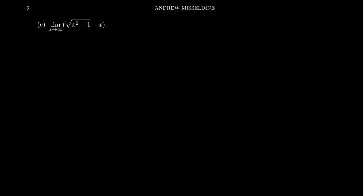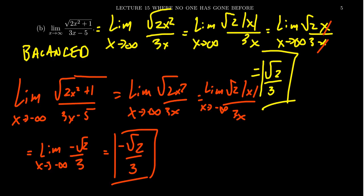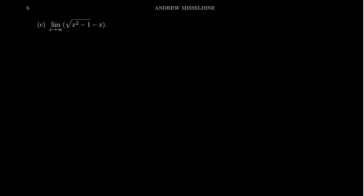The next example is a bit different. Unlike the previous examples, which had an initial indeterminate form of infinity over infinity, this example — when you plug in x equals infinity — gives an infinity minus infinity form. You have the square root of x squared subtracting x, and you might hope they cancel each other out, but we have to be more careful. My strategy when you encounter infinity minus infinity is to turn this into a fraction — we can live with infinity divided by infinity, but not infinity minus infinity.